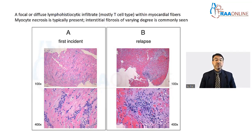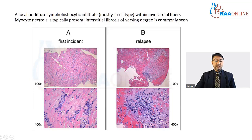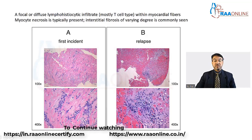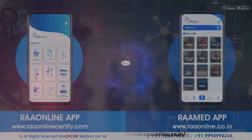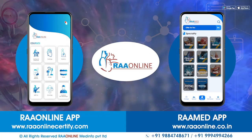Microscopically, specific features are shown in pictures taken from the heart of a patient who had a first incident of myocarditis and later a relapse. In both cases, at high power you can see extensive myocardiocyte necrosis. Most importantly, there are abundant inflammatory cells — predominantly T lymphocytes as confirmed by immunohistochemistry — along with interstitial fibrosis.